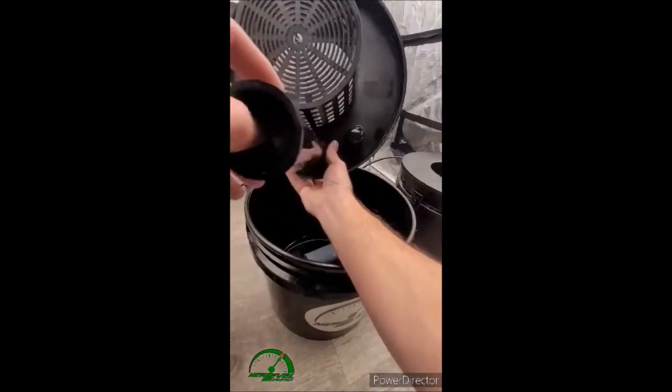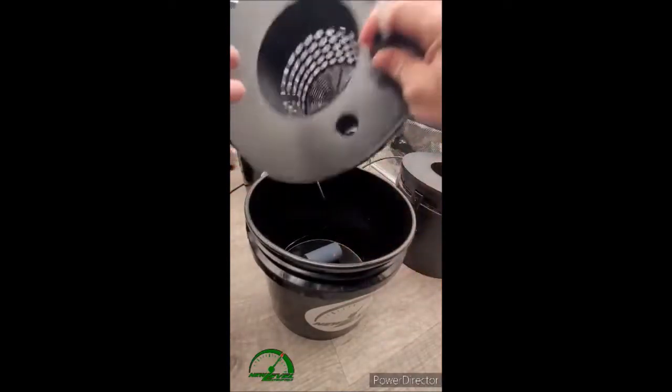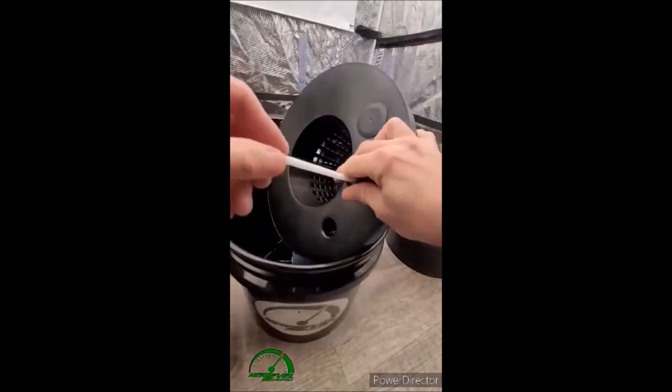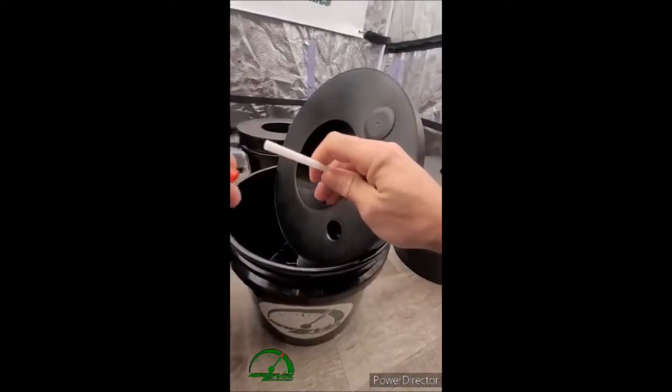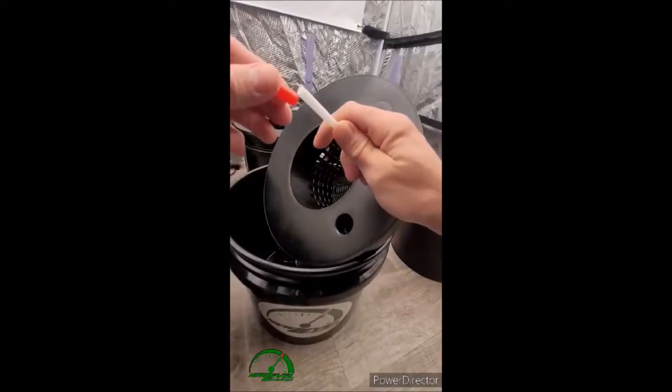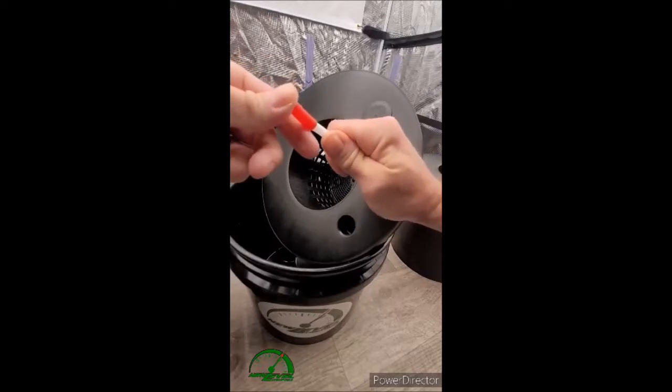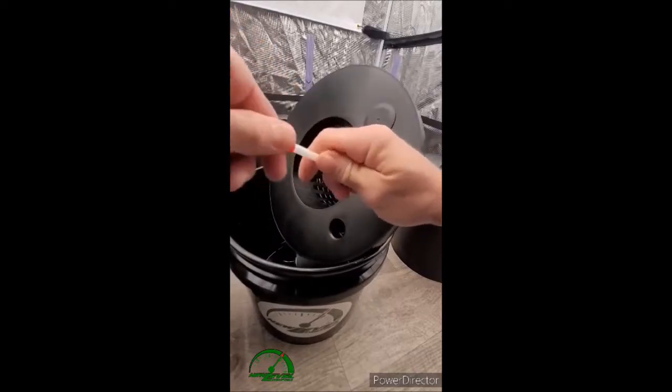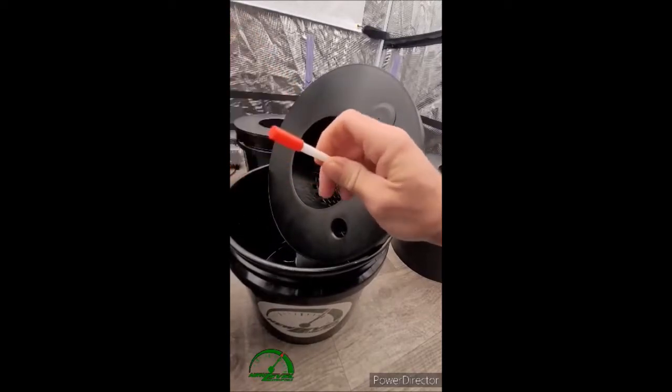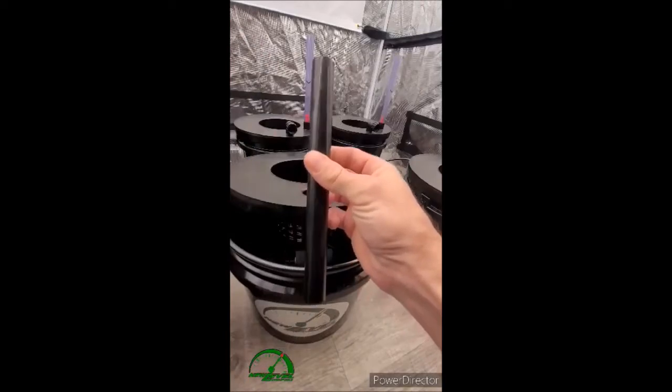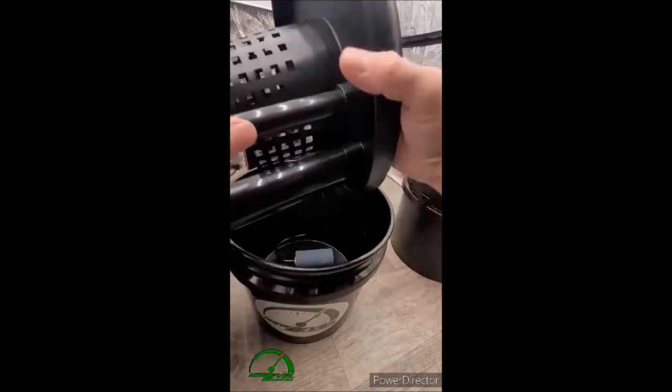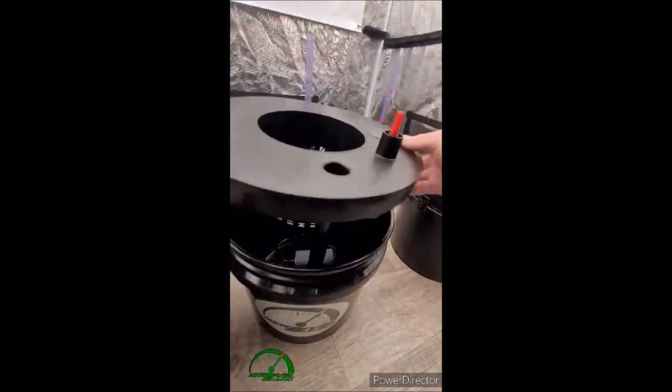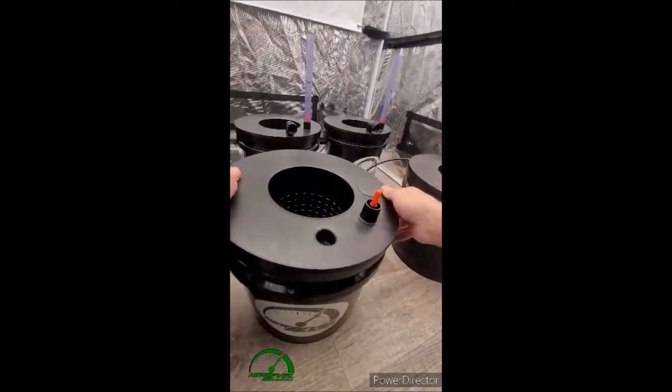Turn the lid around and what holds it all together is this little red plug, and just push it till it bottoms out. We'll take the fill and drain tube, push that till it bottoms out, and then we can put the lid onto the bucket.